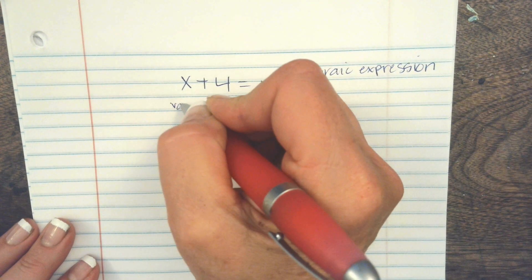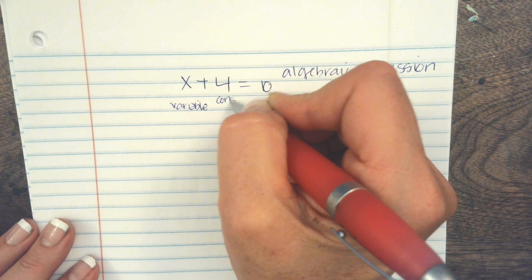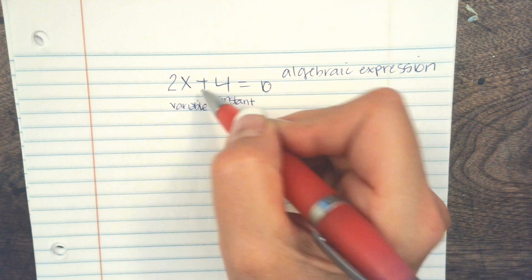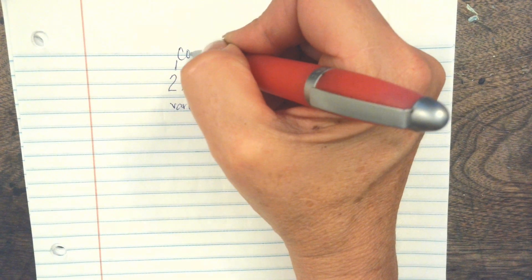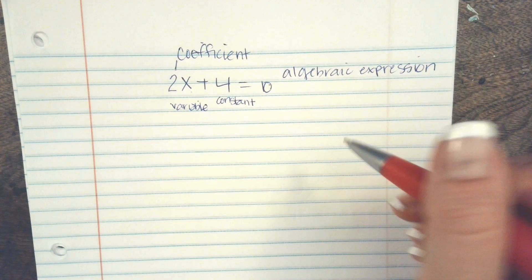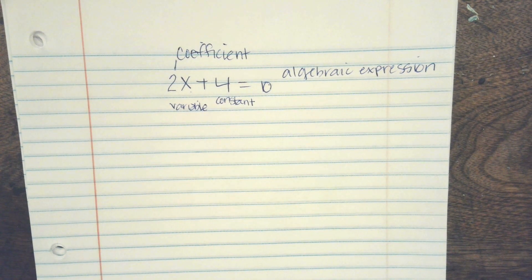This is the variable, and this is called the constant. Sometimes we have a number that is attached to the variable. That would be called a coefficient. This is pretty important to remember, so watching the video a couple times would be helpful and taking notes.